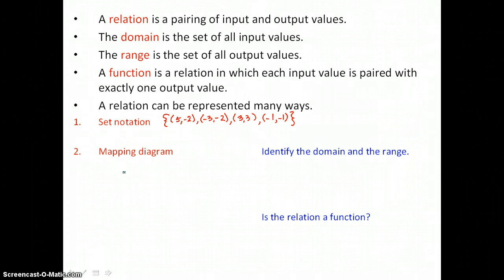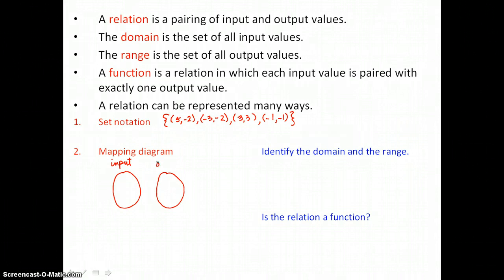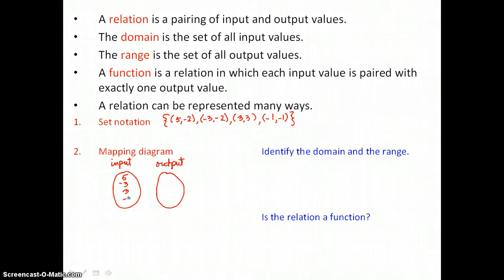We could also put this same relation in a mapping diagram. To do that we need areas for our input and output values. The input values are listed first in the ordered pairs, so our input values are 5, -3, 3, and -1 — we'll put those in the area labeled input. Output values are listed second: -2, -2, 3, and -1. Because -2 repeats, I don't have to repeat it in my mapping diagram — I can list it once.